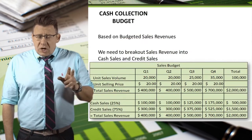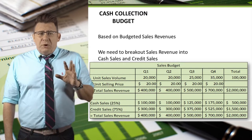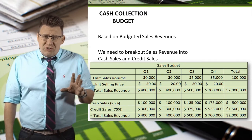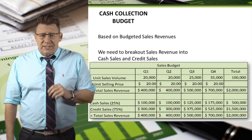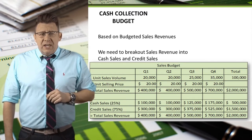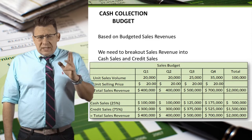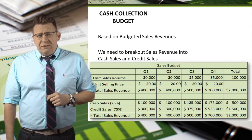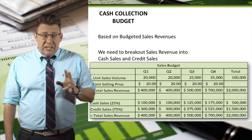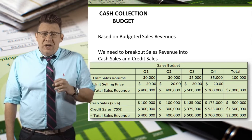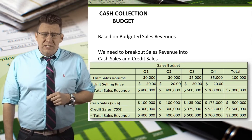To start with, we need to break out our sales between cash sales and credit sales. In this example, let's assume that 25% of sales revenue are cash sales.